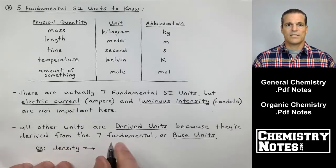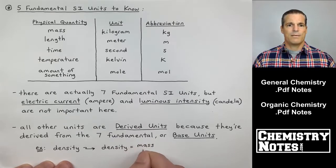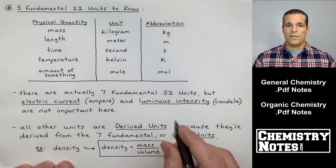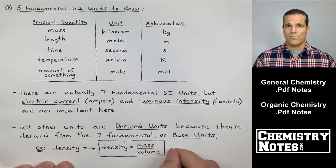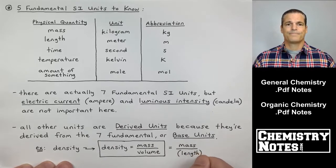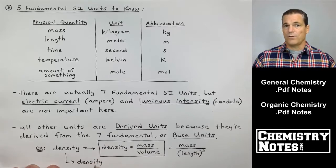We will learn density is mass over volume. So mass could be in grams. Your volume would be actually also a derived unit because volume is length cubed. So density and volume are two examples of derived units.